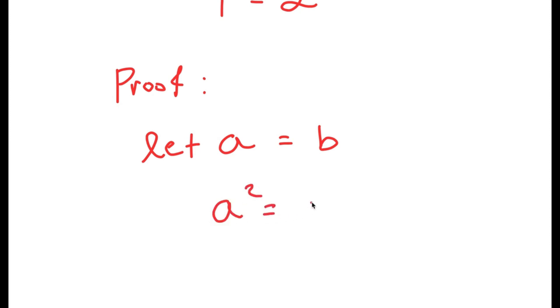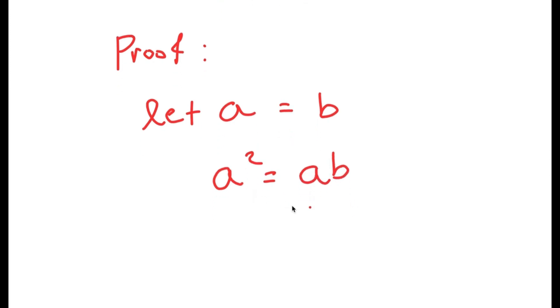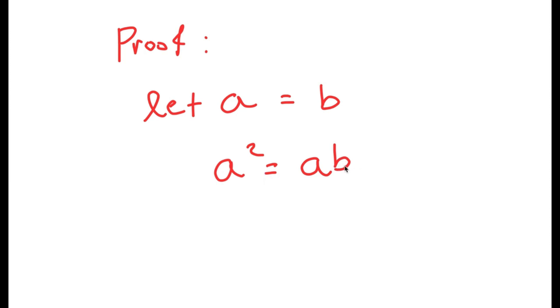Now if a is equal to b, then this means that a squared is equal to a times b, because at the end of the day b is a, so a times b is a squared. So a squared is equal to ab — there's nothing wrong with this.